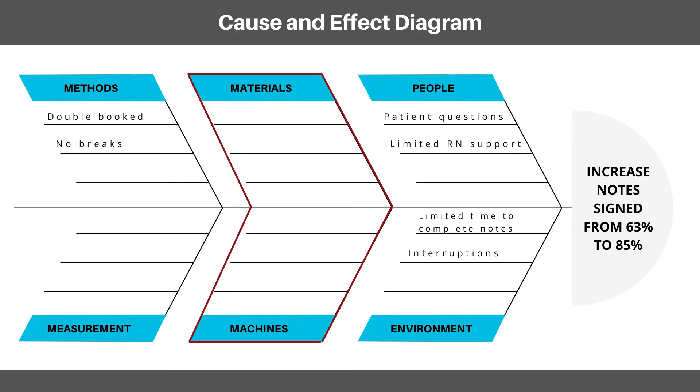We reviewed our completed fishbone diagram. The physicians realized they didn't simply need more time — they wanted to wait to write their notes until they had a block of time. This insight led us to create a dot phrase with the minimum information the pharmacists and nurses needed to proceed. The physicians were able to complete the dot phrase quickly and then go back later and add more detail to their chart. This brought their compliance from 63% to 92% and made for much happier patients and staff.